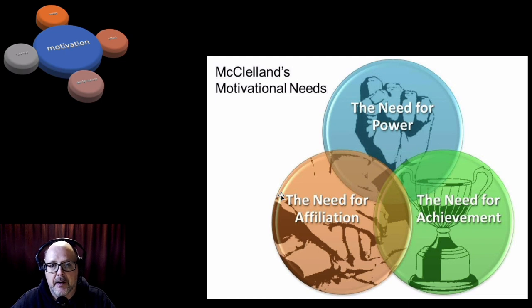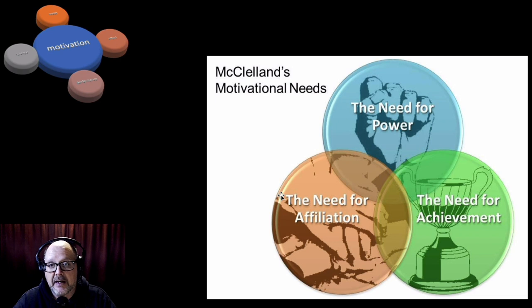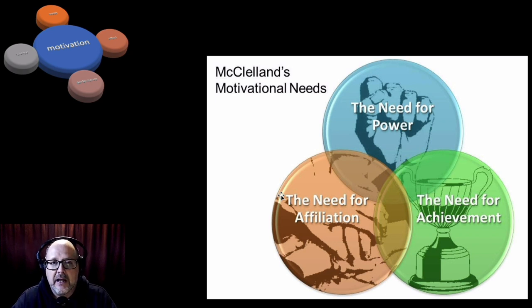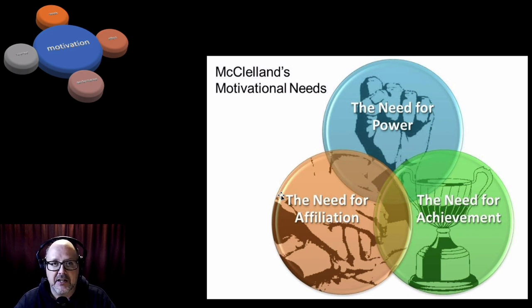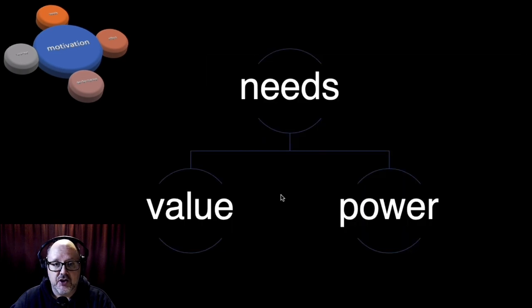The other theory I want to talk about is McClelland's motivational needs. I lean toward this one more than Maslow's because it speaks to three basic needs every human has. First is the need for achievement — we all have a drive to achieve certain things. Second, we all have a need for affiliation, a need to belong to something. And third, we all have a need for power — whether we use it for good or for change — because through power, we are enabled to enact change.